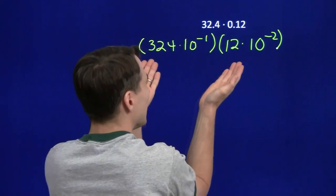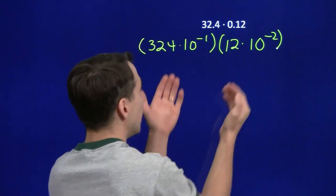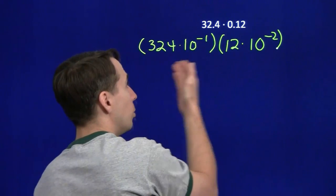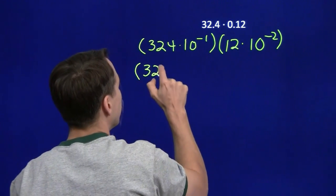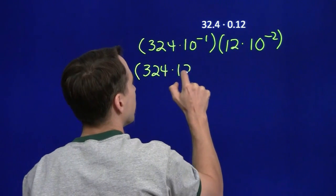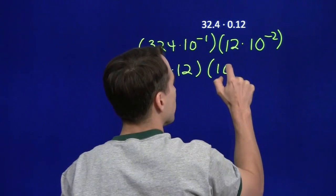So this product of decimals is this product of integers and powers of 10. We're multiplying four things here. We can multiply them in whatever order we want to, and what we want to do is multiply the integers and multiply the powers of 10.